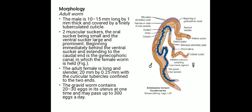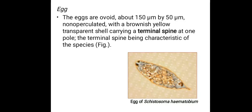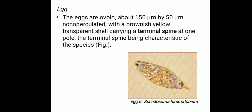The gravid worm contains around 20 to 30 eggs in its uterus at one time and can lay or pass around 300 eggs per day. The egg is ovoid, about 150 micrometers by 50 micrometers. It is non-operculated with a brownish-yellow transparent shell, carrying a terminal spine at one pole. This terminal spine is characteristic of the species.